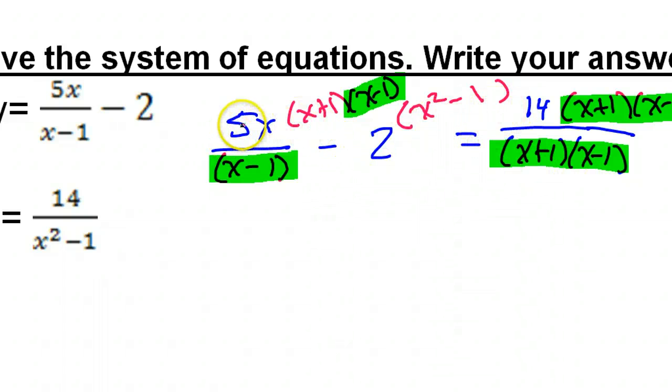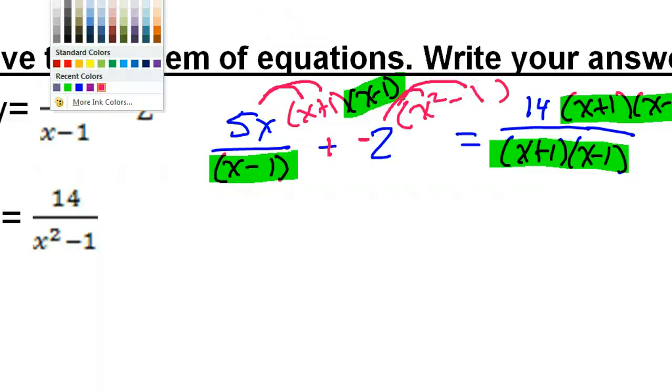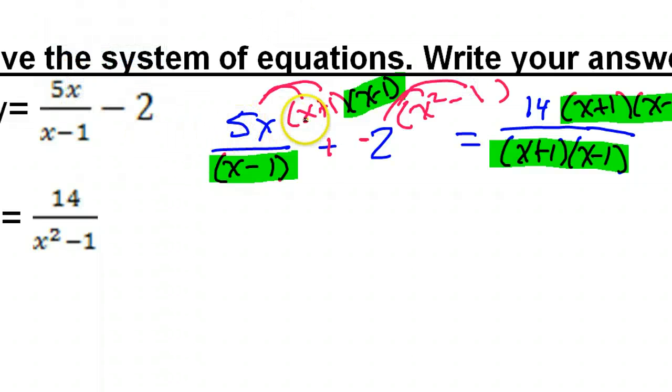Okay. Anyway, so, now, I am going to go ahead and distribute everything. Now, when I distribute this 2, I'm not going to distribute a 2. This is negative 2. Please focus on that. I'm distributing a negative 2 when I do this. So, what I'm going to have is, so, 5x times x, that's going to be 5x squared. 5x times 1, so that'll be 5x. Now, negative 2 times x squared, that's negative 2x squared. Negative 2 times negative 1 is positive 2. And, that's equal to 14.